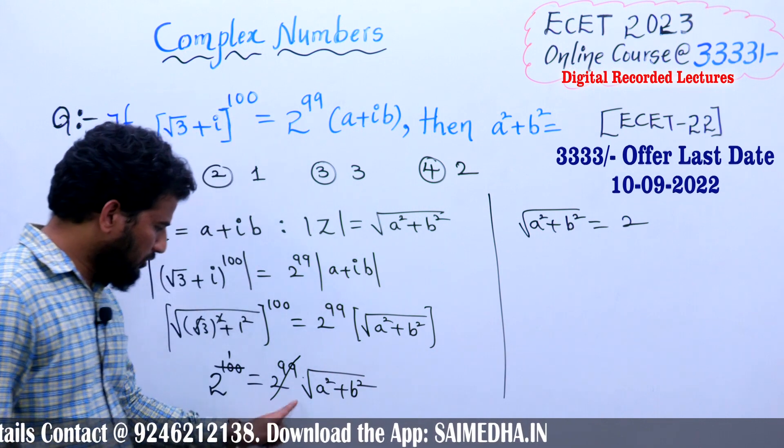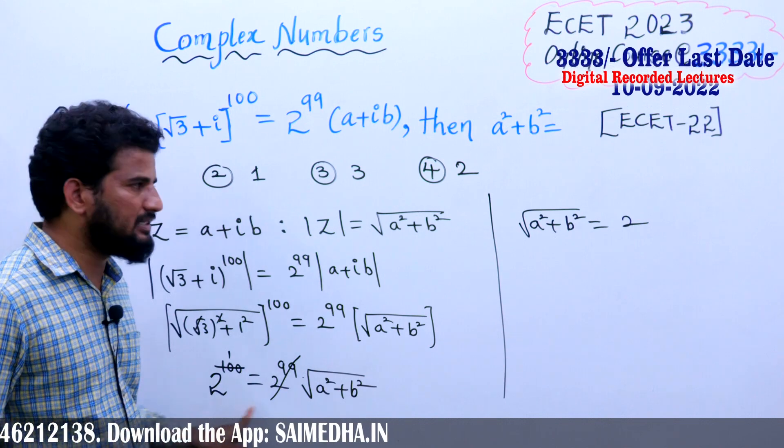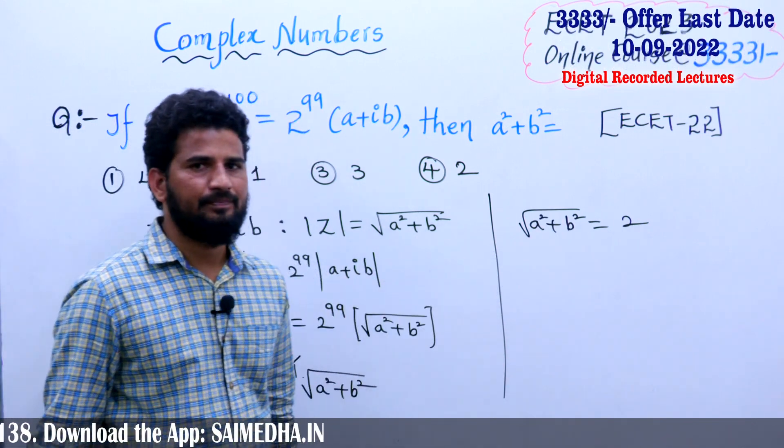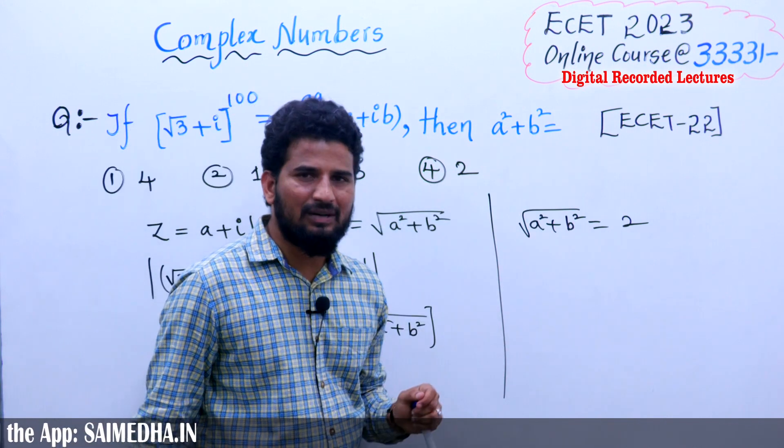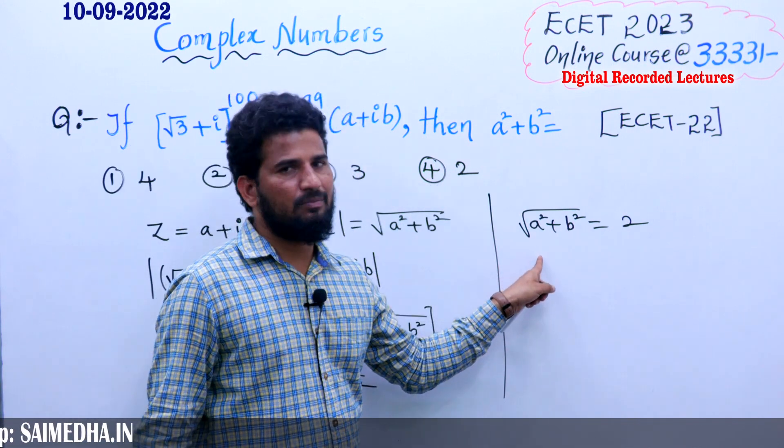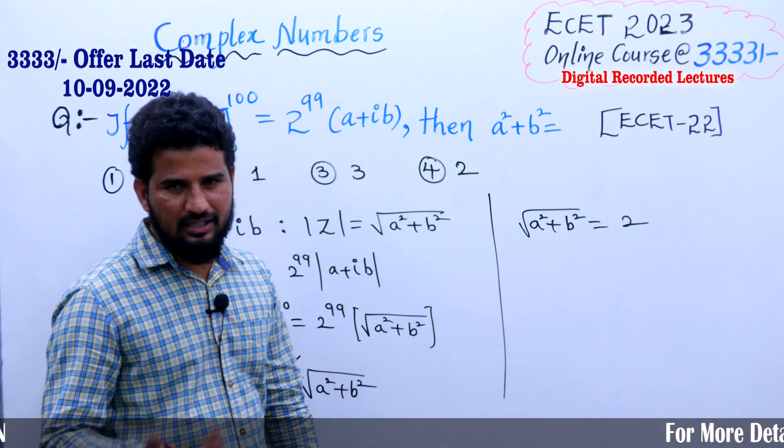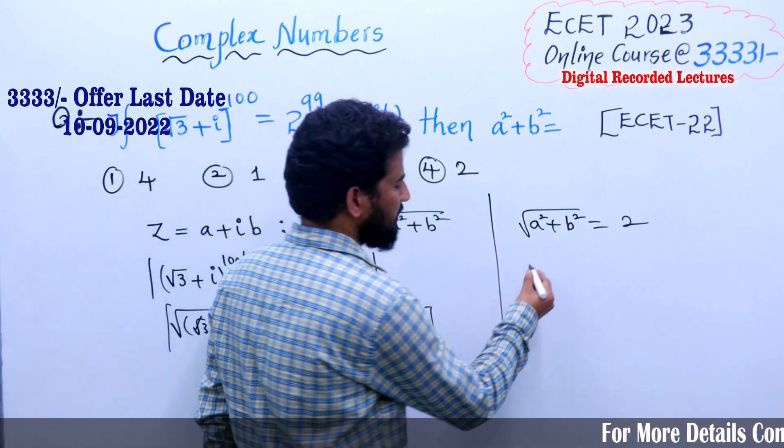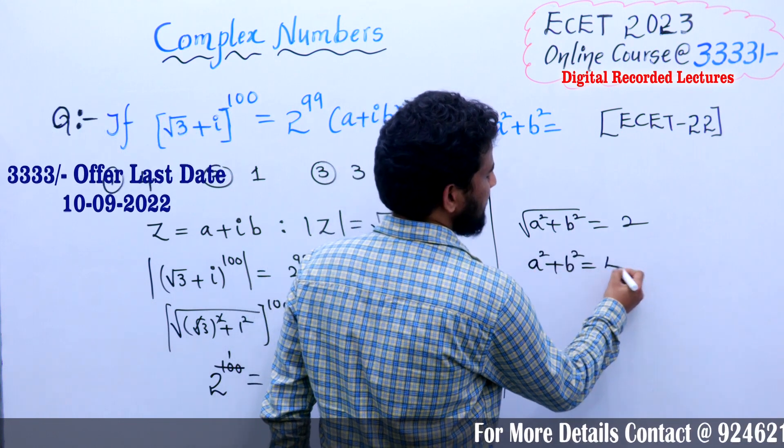√(a² + b²) = 2^1. Actually, 2^1 remains equal to √(a² + b²). Based on the requirement, if I square on both sides, it is going to be a² + b² = 4.